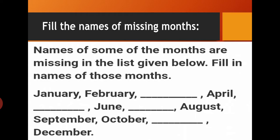There are 12 months in a year. Their names are: January, February, March, April, May, June, July, August, September, October, November, December. So total there are 12 months.